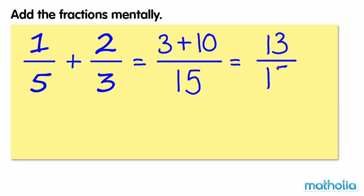13 fifteenths is in its simplest form. So 1 fifth plus 2 thirds is equal to 13 fifteenths.